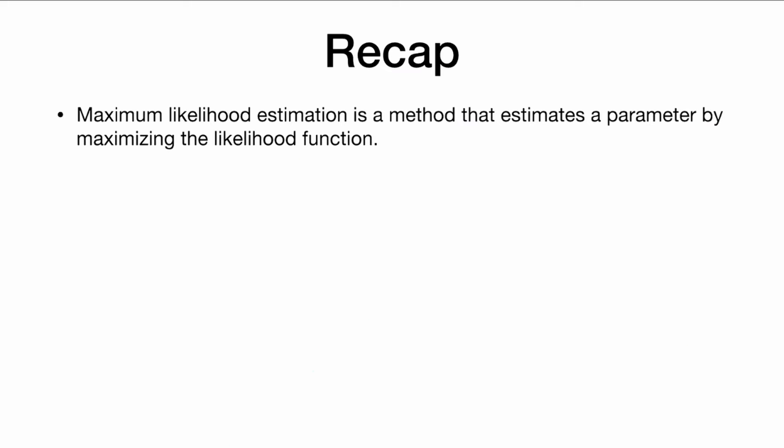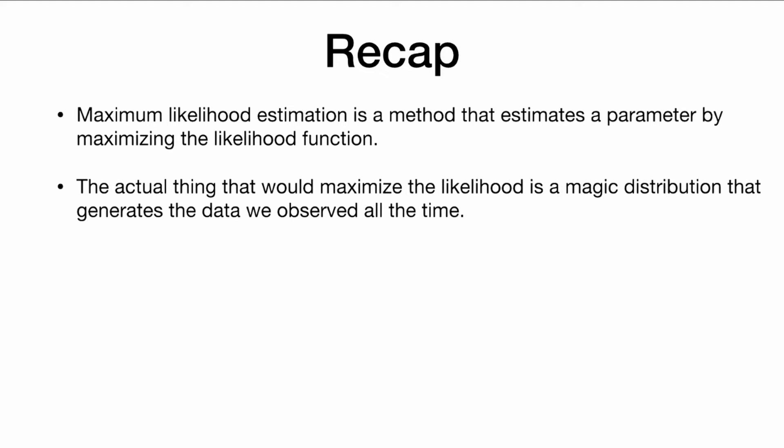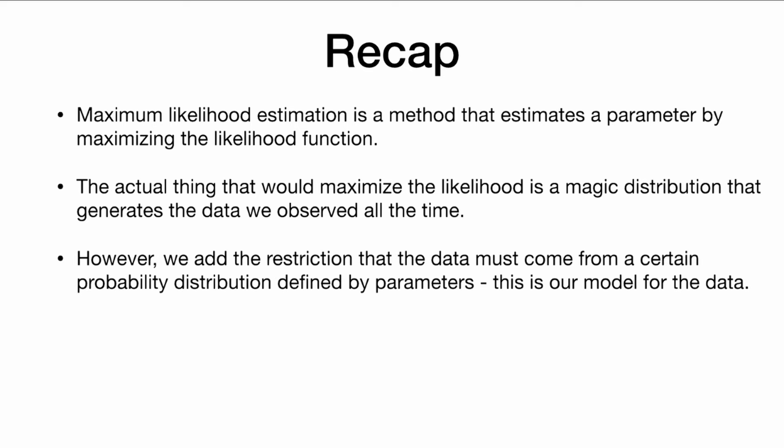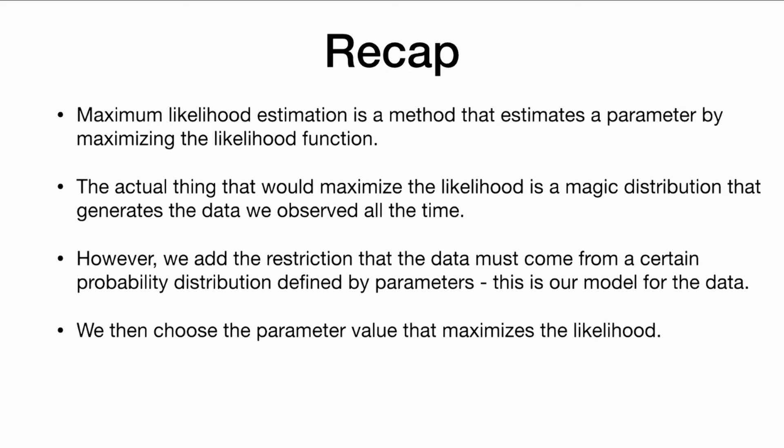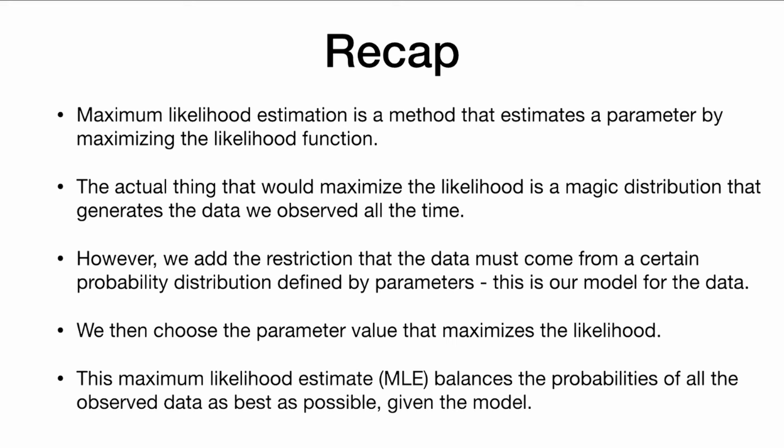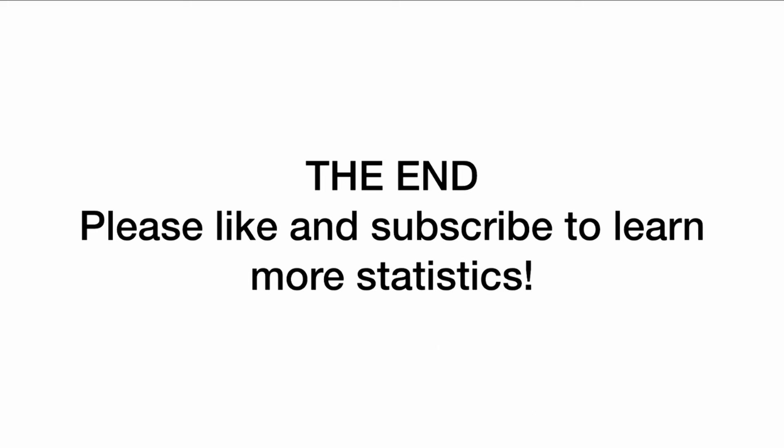So to recap: maximum likelihood estimation is a method that estimates a parameter by maximizing the likelihood function. The actual thing that would maximize the likelihood is a magic distribution that generates the observed data all the time. However, we add the restriction that the data must come from a certain probability distribution defined by parameters — this is our model for the data. We then choose the parameter value that maximizes the likelihood. This MLE balances the probabilities of all the observed data as best as possible given the model. Thanks for watching — please like and subscribe to learn more statistics.